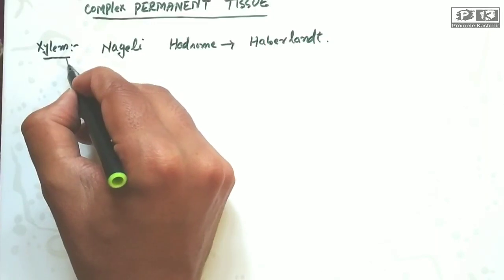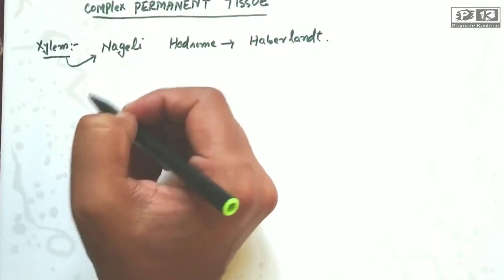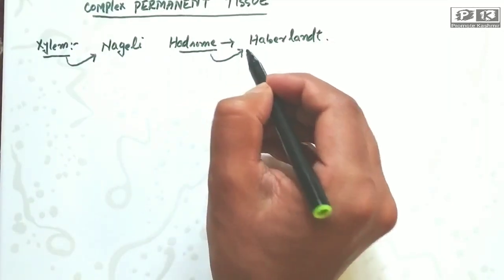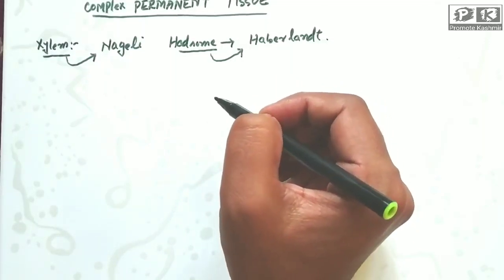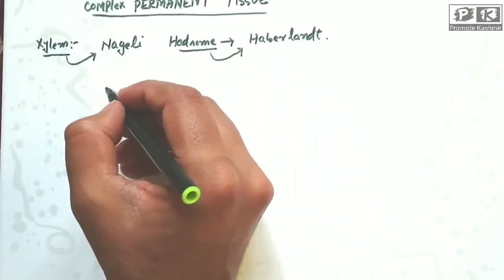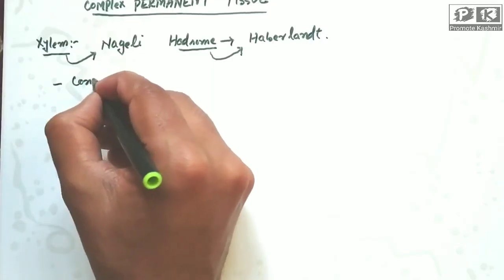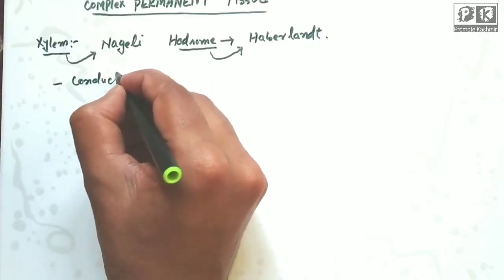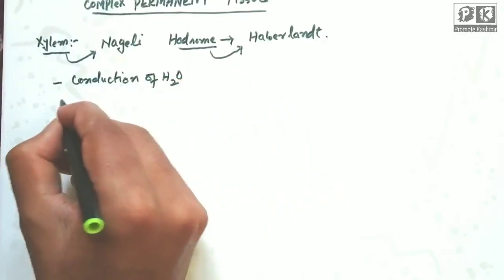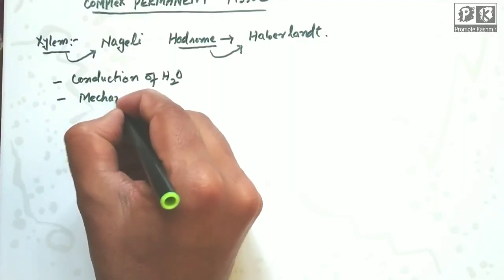Xylem is a complex permanent tissue. Xylem is involved in conduction of water and it is responsible for mechanical support.